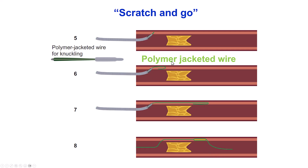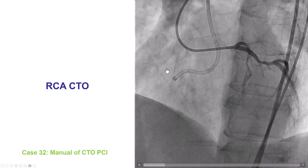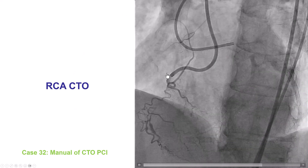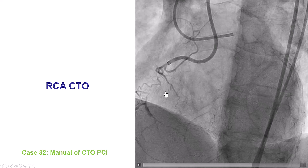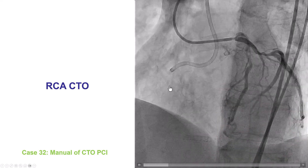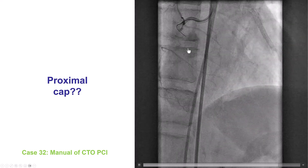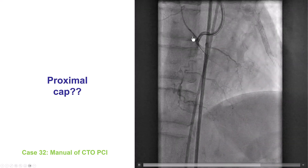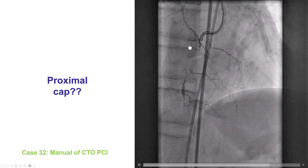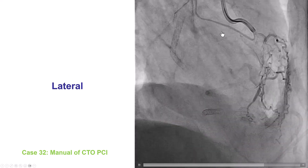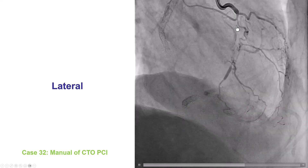The usual polymer-jacketed wires used for this are the Gladius Mongo, but also the Fielder XT and Pilot 200 can be used — although the Pilot 200 and the Raider form larger knuckles. Here is an example: a right coronary artery CTO with an ambiguous proximal cap, because there are multiple small branches and it is unclear where the occlusion actually starts. Multiple angiographic views are assessed, including the lateral view, which is often very useful for the RCA, but the location of the proximal cap remains confusing.